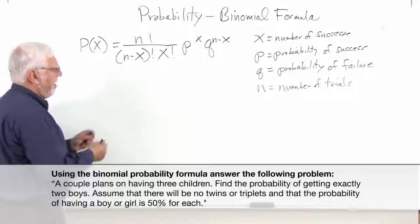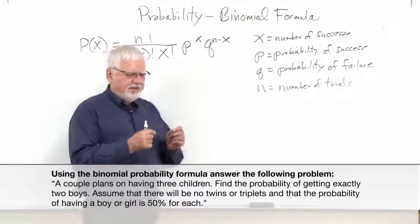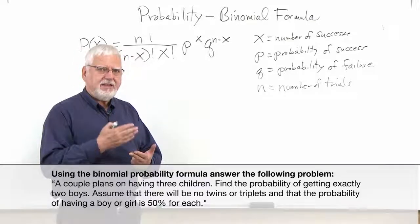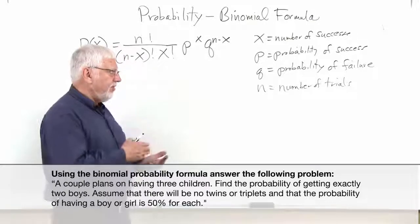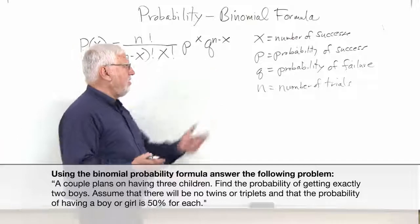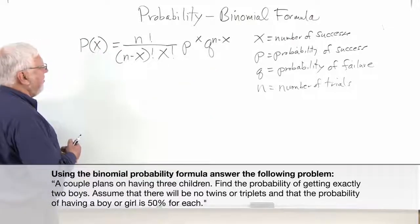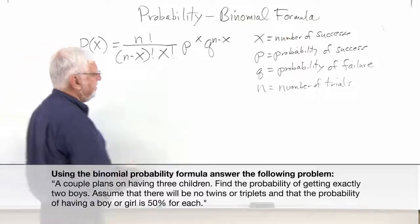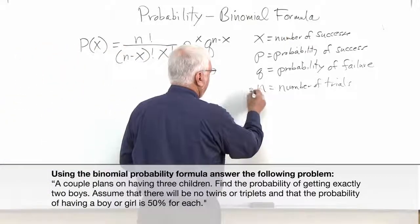So we should be able to take our situation where the couple's going to have three children, and we want to know what the probability of getting exactly two. And we already know the answer is three eighths, but how are we going to use this? So let's see, we know the total number of trials. What's our n in this case? Our n would be three.